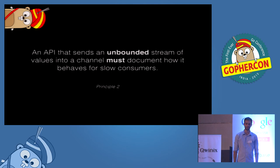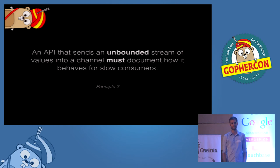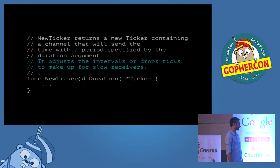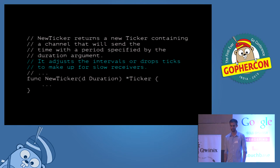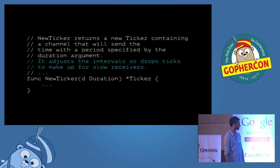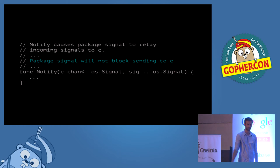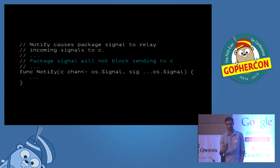The second principle: an API that sends an unbounded stream of values into a channel must document how it behaves for slow consumers. This is `time.NewTicker` from the standard library — it sends values into a channel every duration period, and it says it adjusts the intervals or drops ticks to make up for slow receivers. If you're not reading values off the channel fast enough, they're just going to disappear. Similarly, `signal.Notify` says package signal will not block sending — if you don't service signals fast enough, they will be dropped.